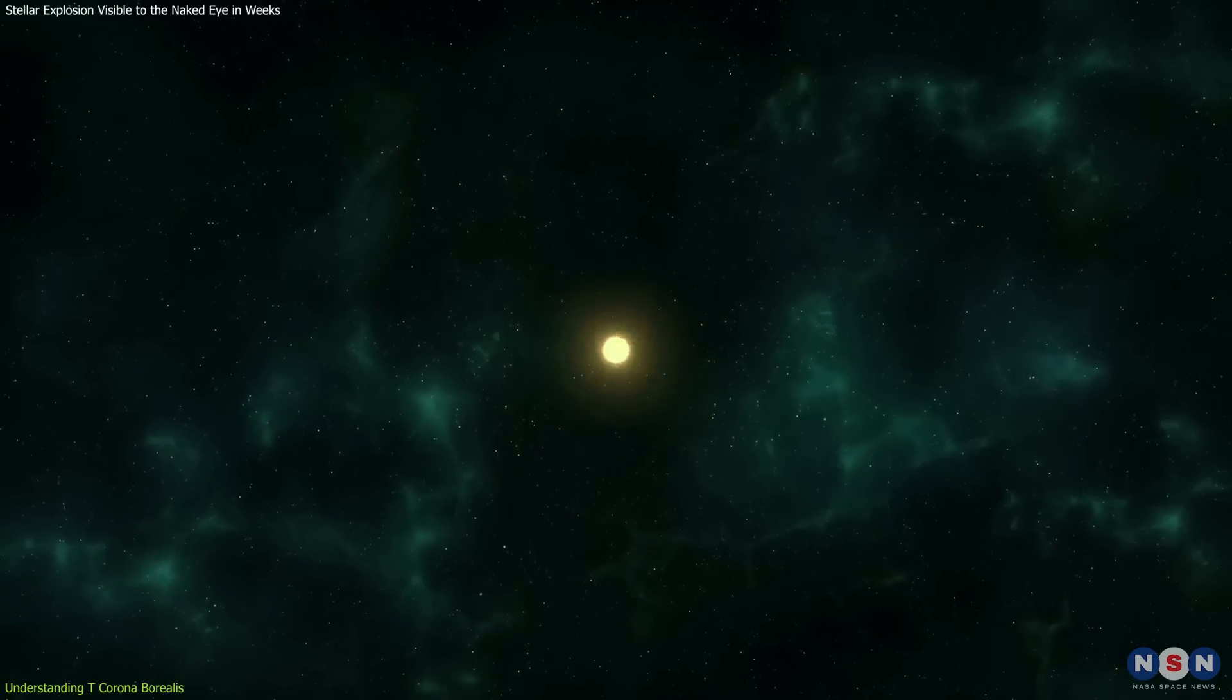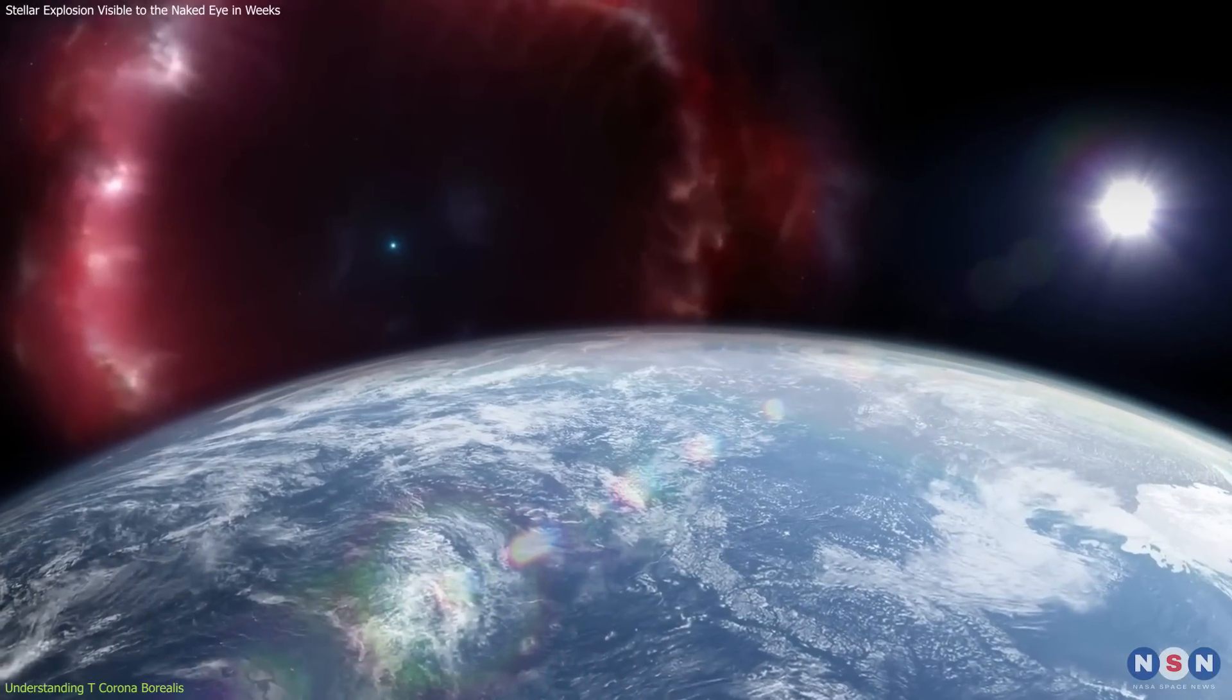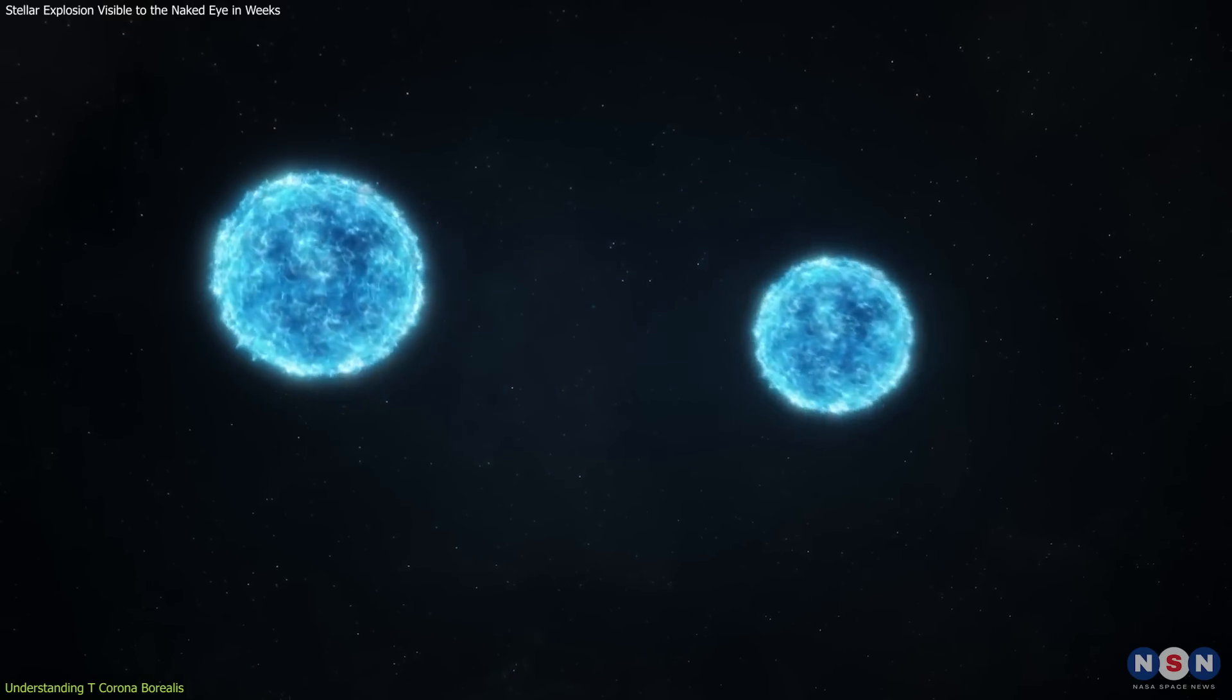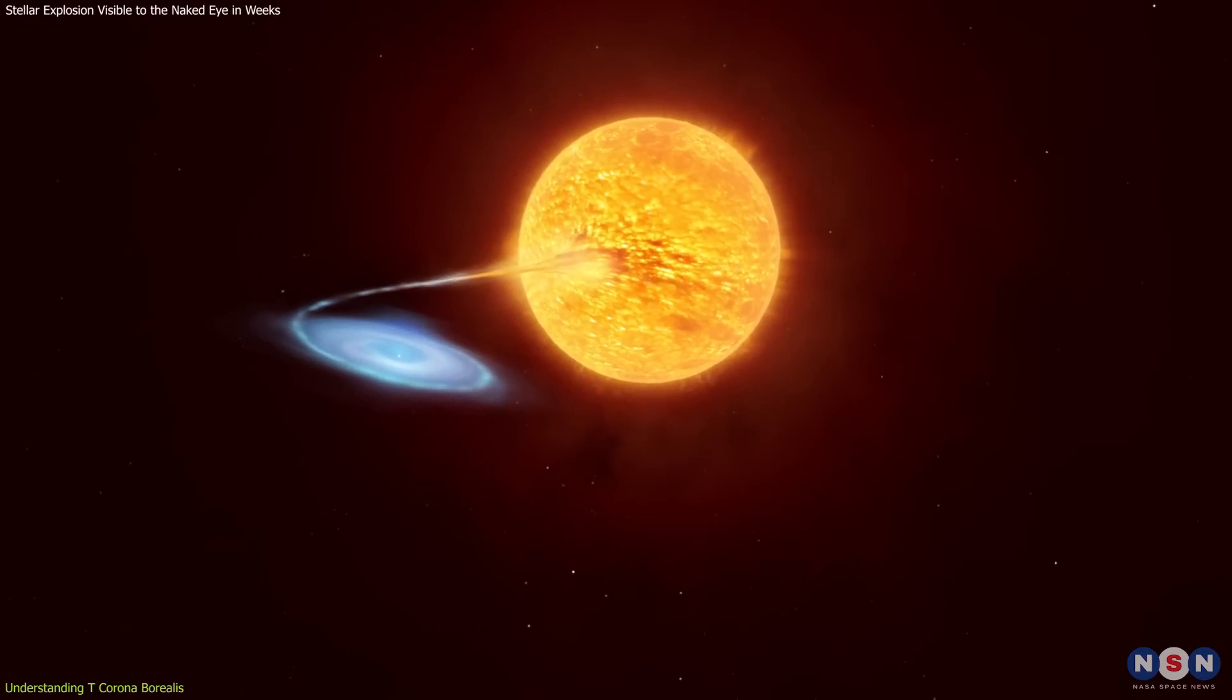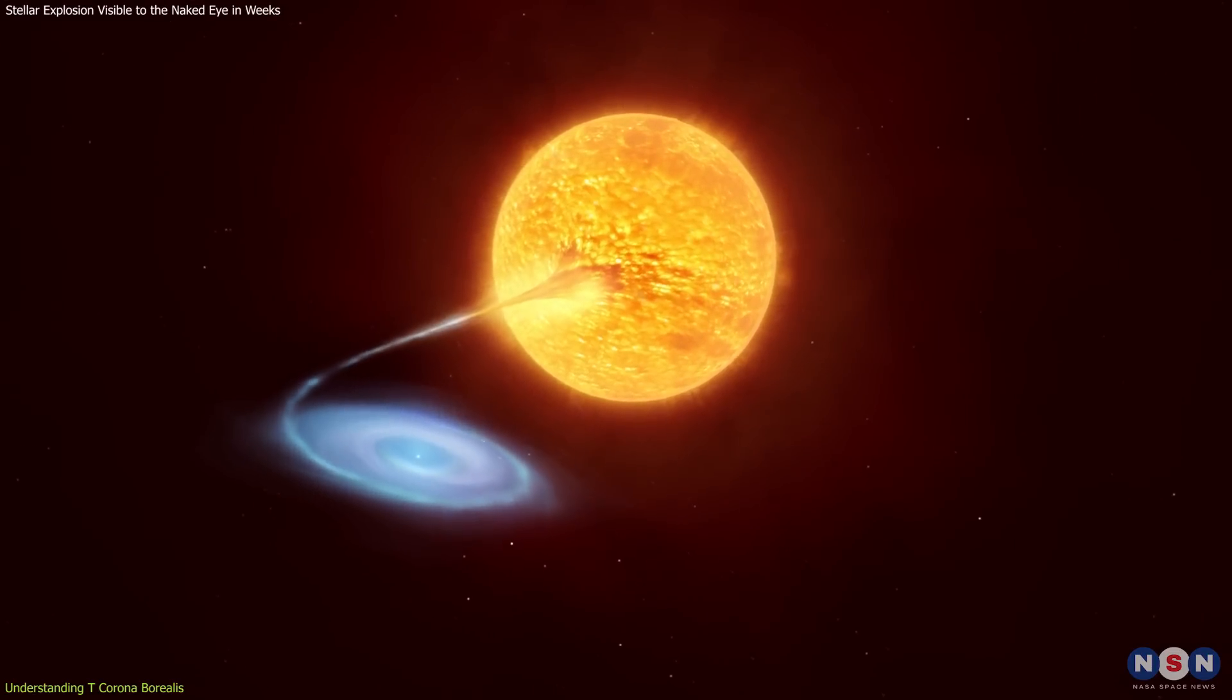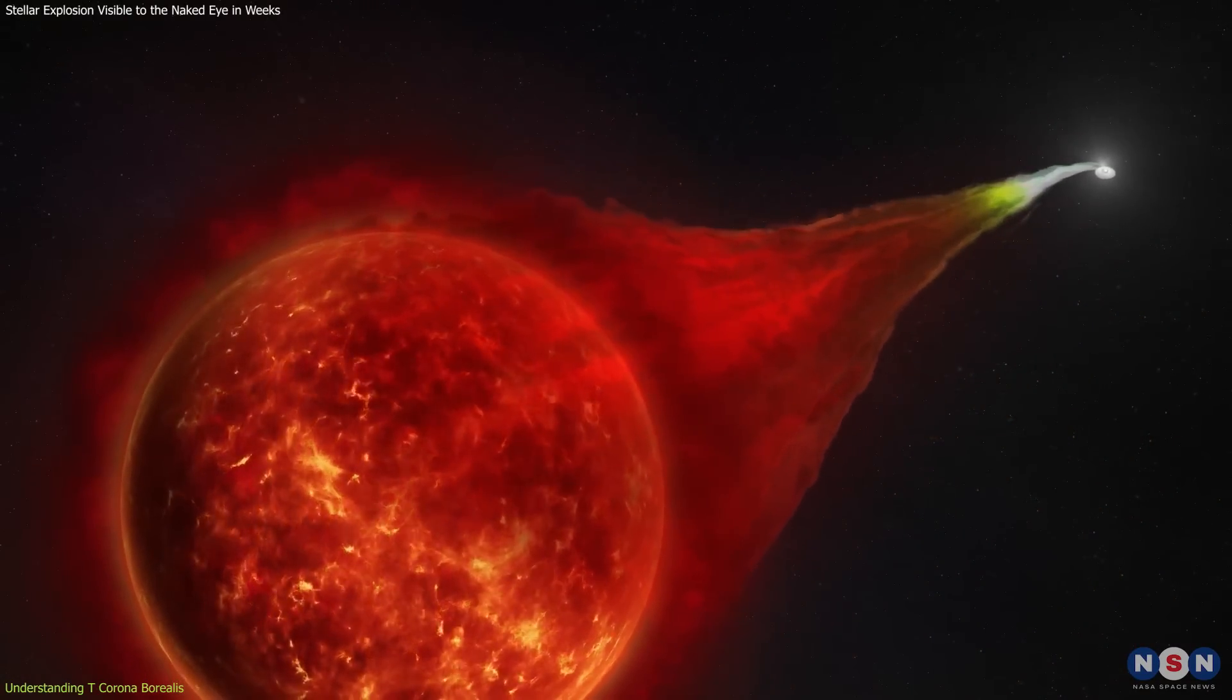The importance of this nova isn't just about its regular outbursts. Because it's relatively close to Earth, it gives us a unique chance to closely observe how two stars in a binary system interact with each other. These interactions, particularly the mass transfer from the red giant to the white dwarf, are fundamental to understanding the life cycle of stars and the dynamics of binary systems.